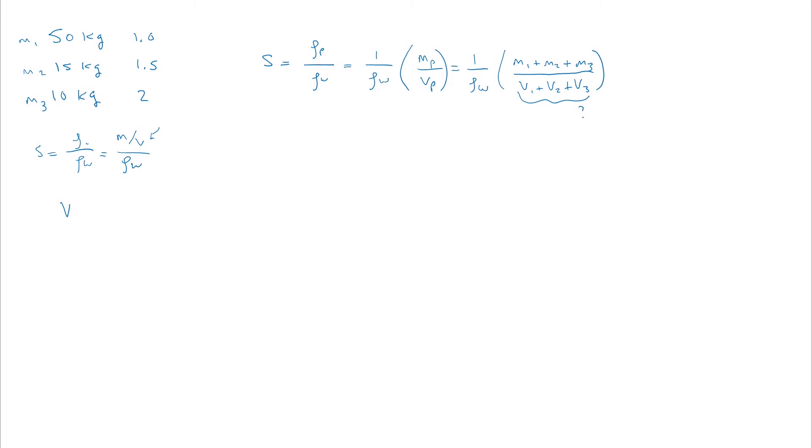So doing that, we have that the volume is equal to the mass divided by the specific gravity of the object times the density of water. So this expression for the volume will be something that we can use over here where we're not sure what the volumes are. So let's go ahead and do that.